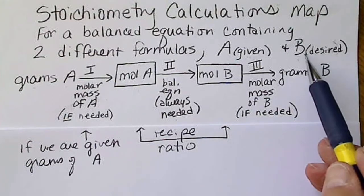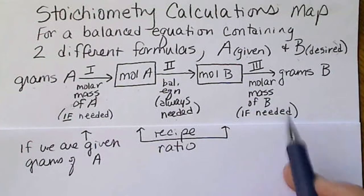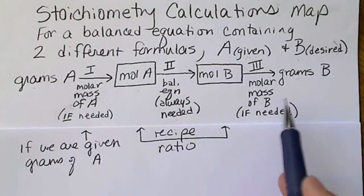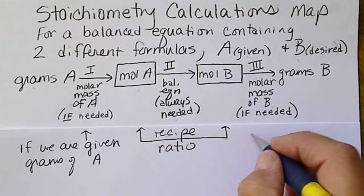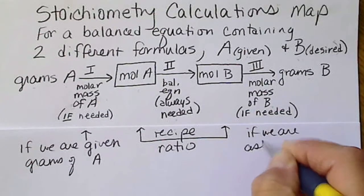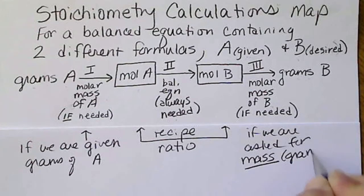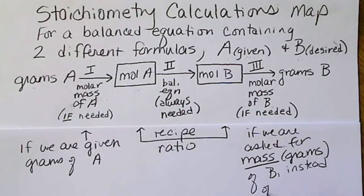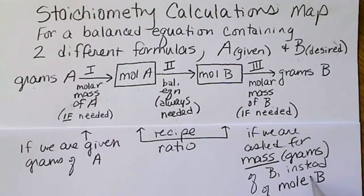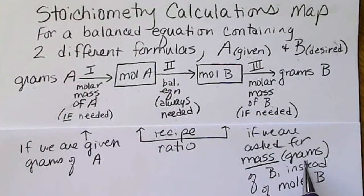If the question asks us about the mass of B or grams of B, then we have to convert from moles of B to grams of B using the periodic table and the formula. So we would calculate the molar mass of B and convert moles to grams. So if needed is if we are asked for the mass, of course that would be grams, of B instead of moles. So sometimes a question could ask us about moles of B. If that's the case, then we would stop right here. But most likely the question is going to ask us for the mass of B or how many grams of B there are.